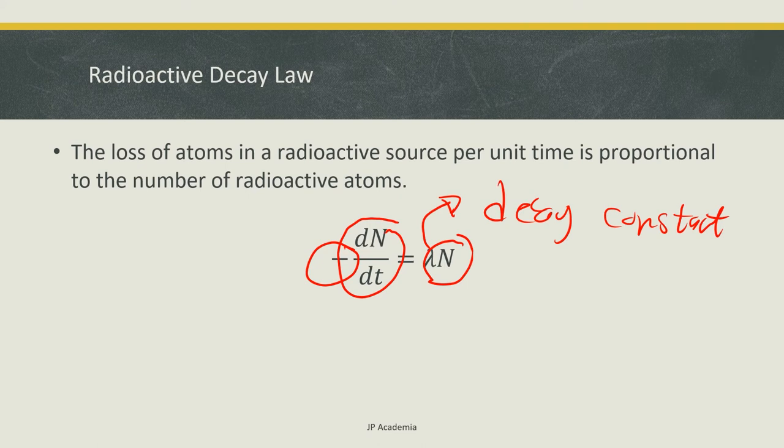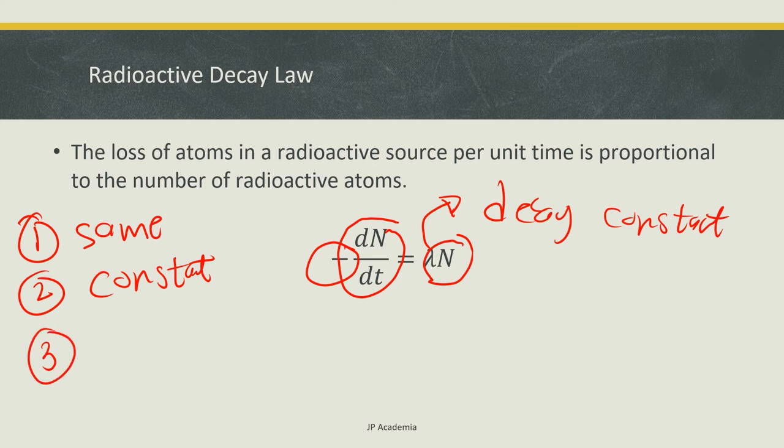This refers to the probability that a given nucleus will decay per unit time. For a certain species, this lambda or decay constant is said to be first, the same for all nuclei. Second, this is constant, which means this is independent of the number of nuclei present. Third, this is independent of the age of the nucleus.